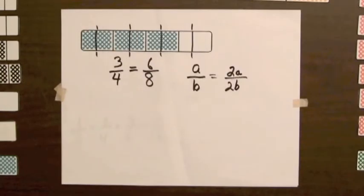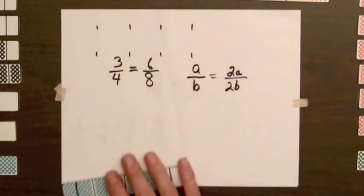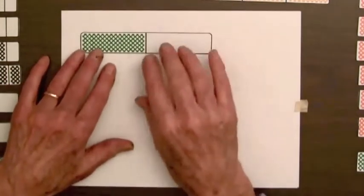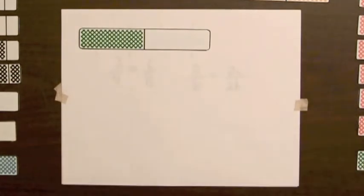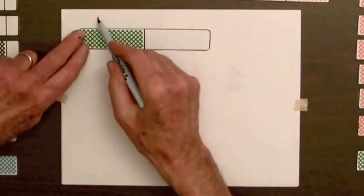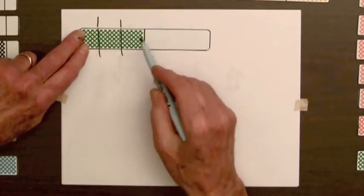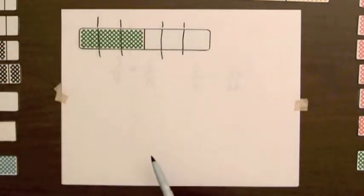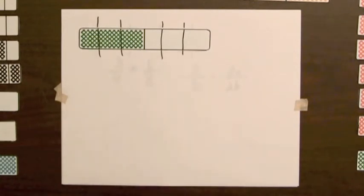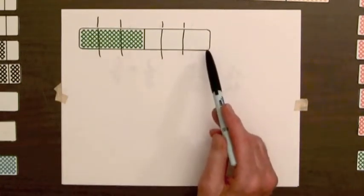A similar thing happens if we split the parts of a bar into three equal parts. Let's try this on the bar for one-half. I'm going to split each part into three equal parts. We've increased the number of parts, total number of parts, from two to six.